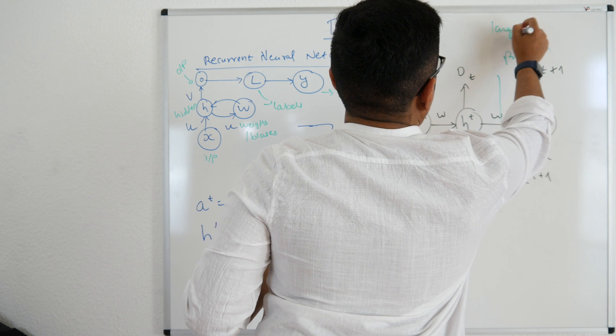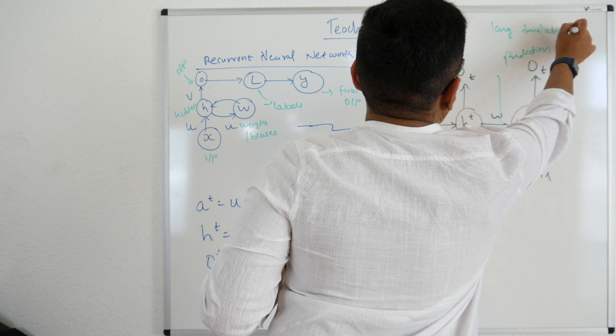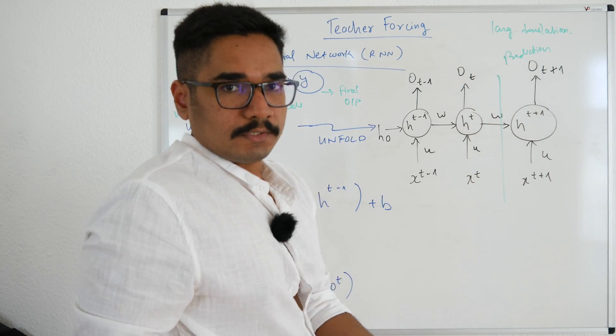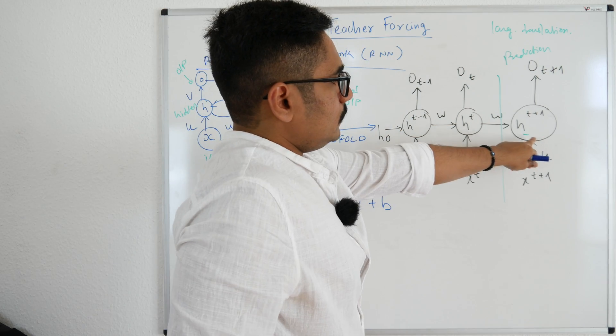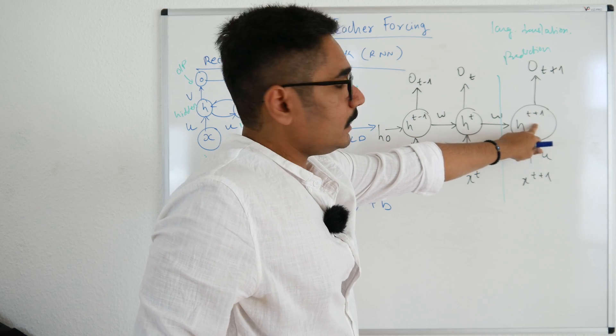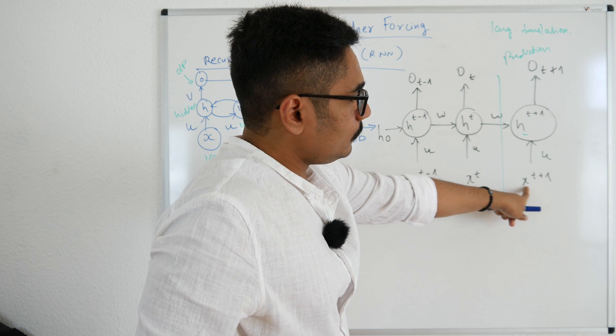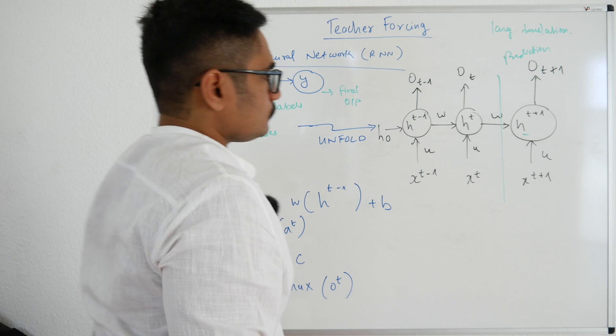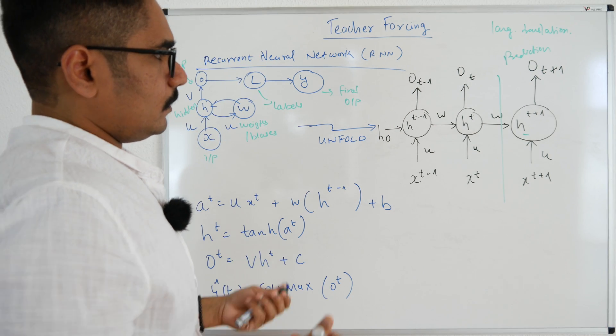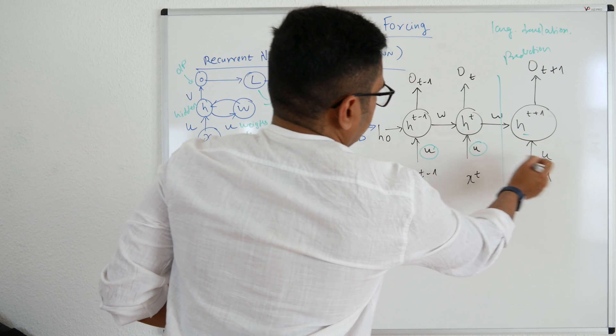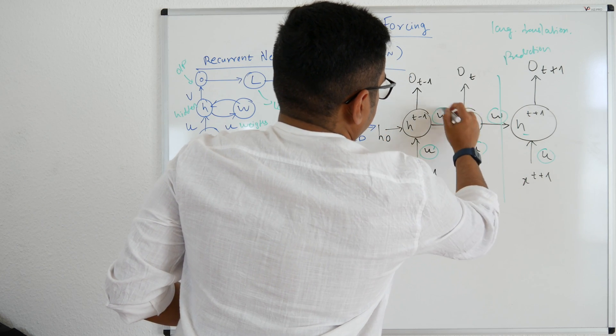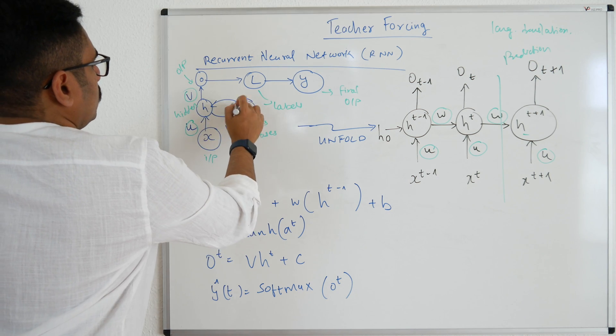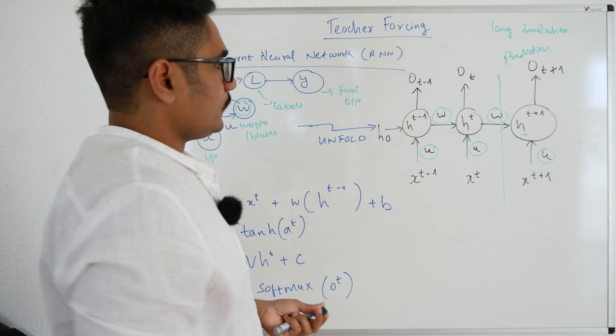This can be considered as a phase for prediction. Our language translation use case, let's take that example here. What would be the next word in the sequence? That is solved with the help of a hidden layer at time t plus one, which receives an input at t plus one with a weight u at time t plus one.